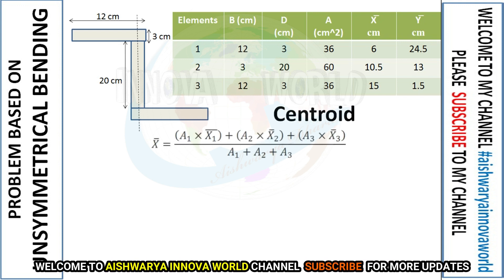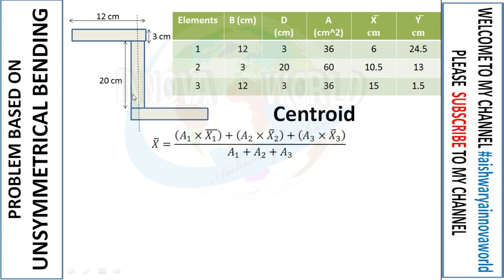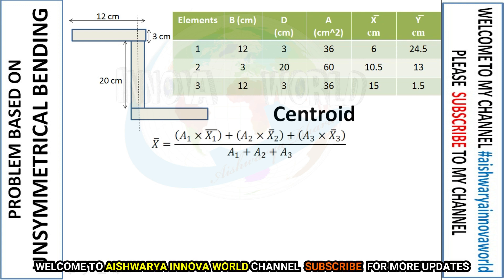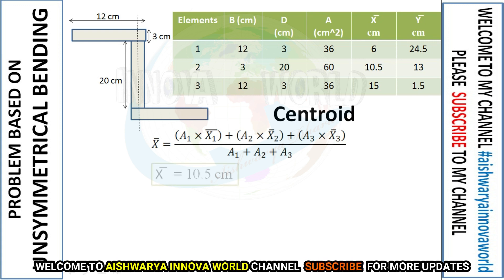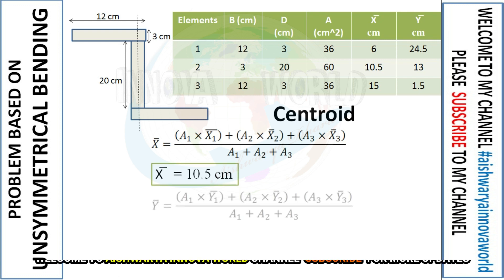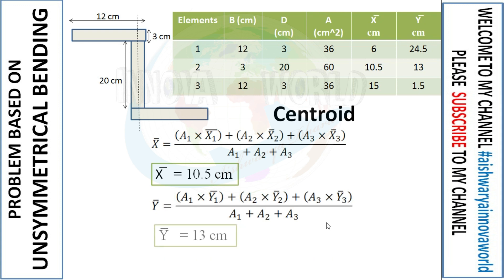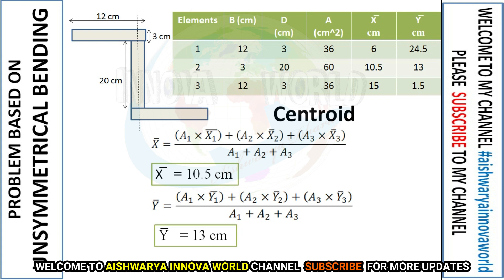Recalling the centroid formula for the entire section, we apply it using the individual values from the table. Substituting, we get x̄ = 10.5 cm for the overall section. Similarly, applying the ȳ formula and substituting values gives ȳ = 13 cm.